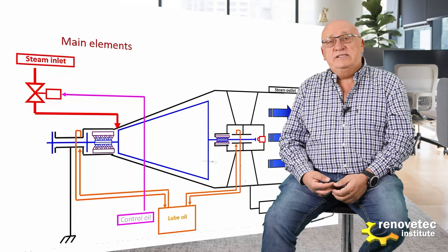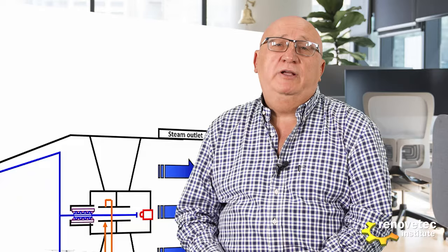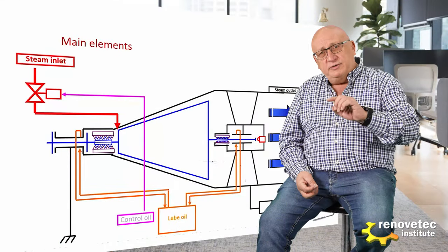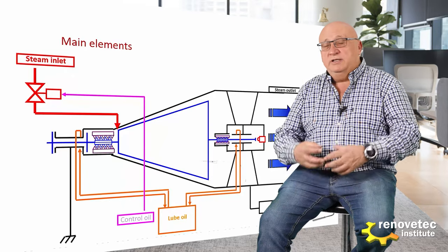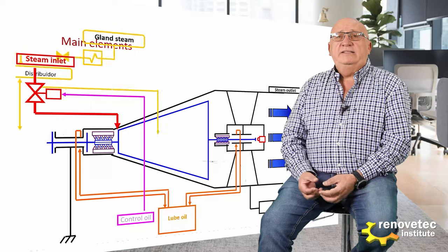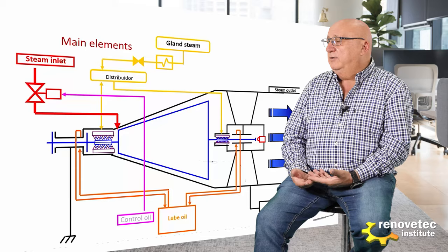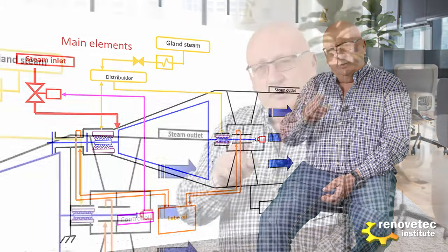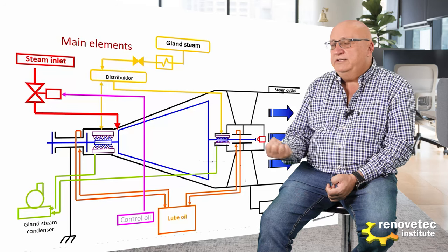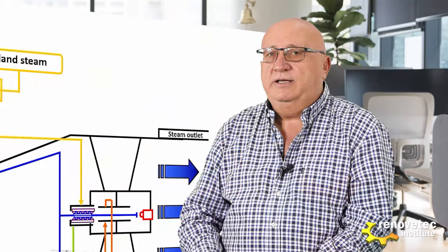The labyrinth seal blocks or inhibits the possibility of steam leakage on the two sides of the shaft. This mechanism provokes a loss of pressure and is very sophisticated. We will see in another video how the labyrinth seal works. The gland steam is one element needed to allow the labyrinth seal to work properly, and the gland steam condenser condenses the steam used to block the steam inside the turbine.